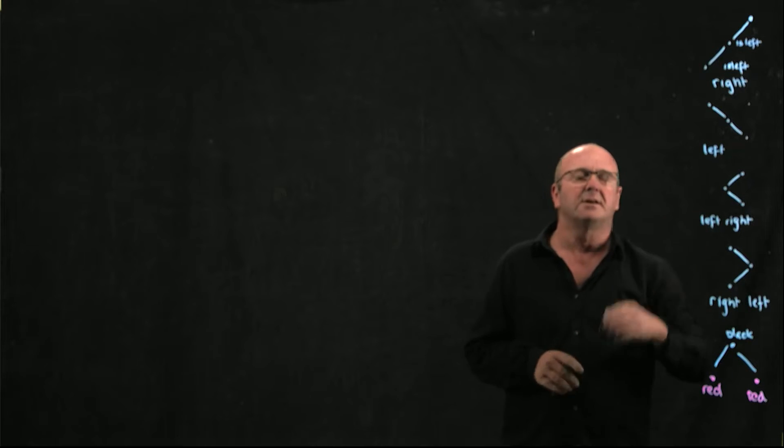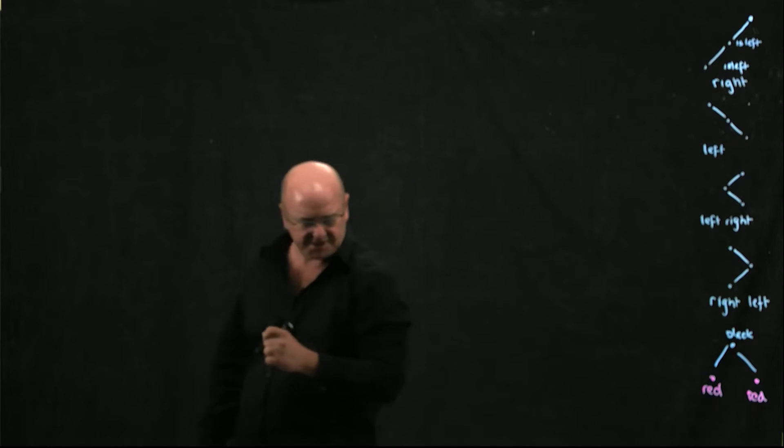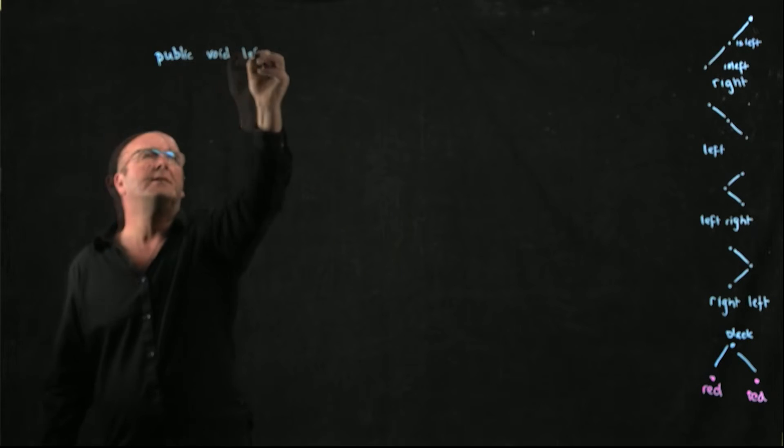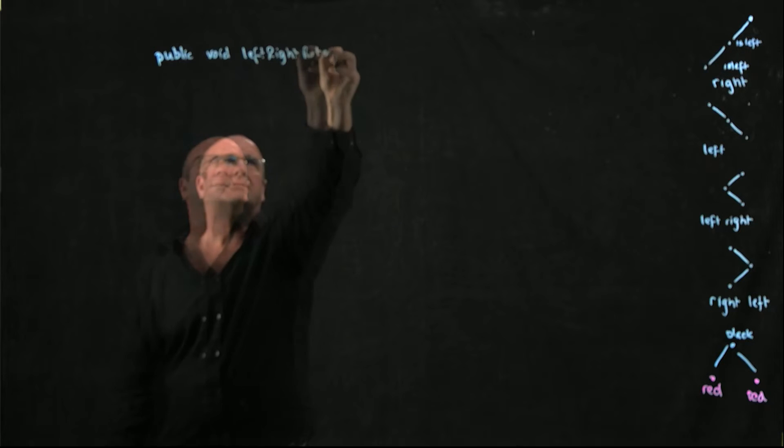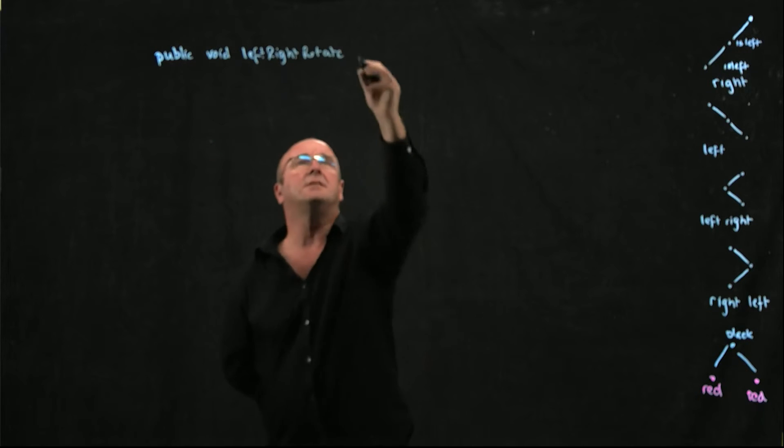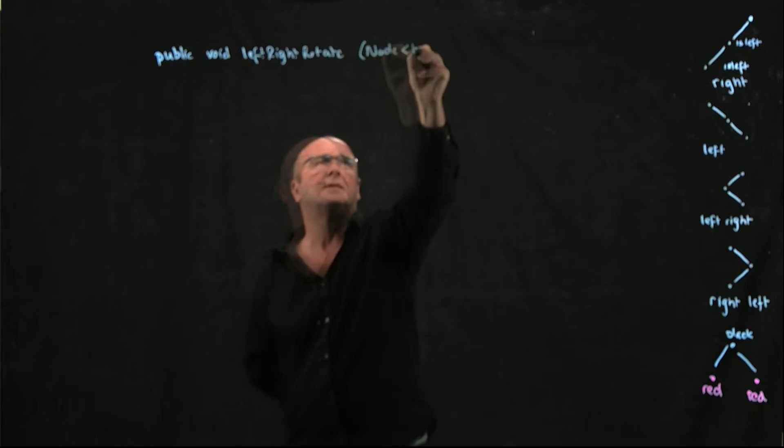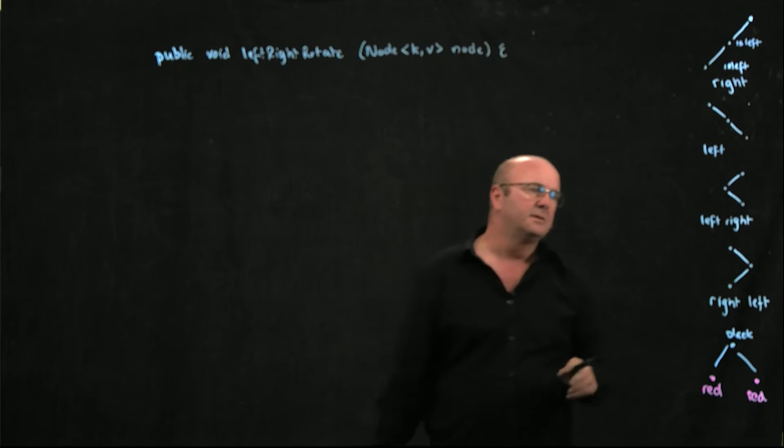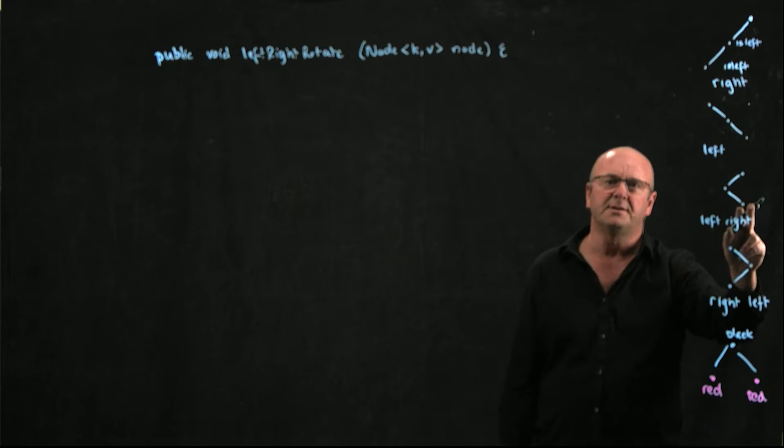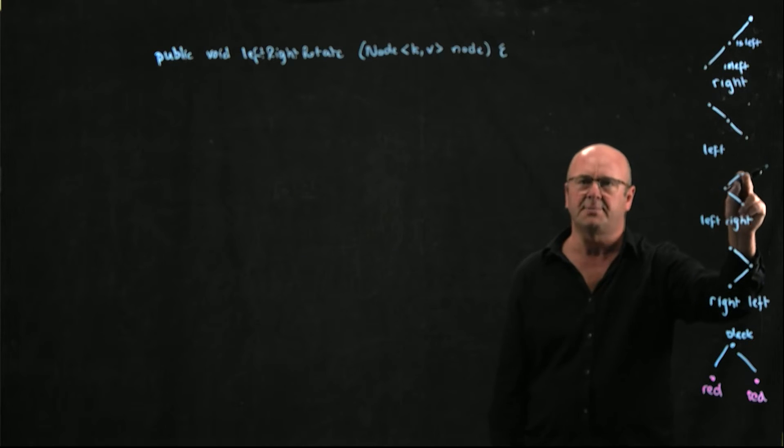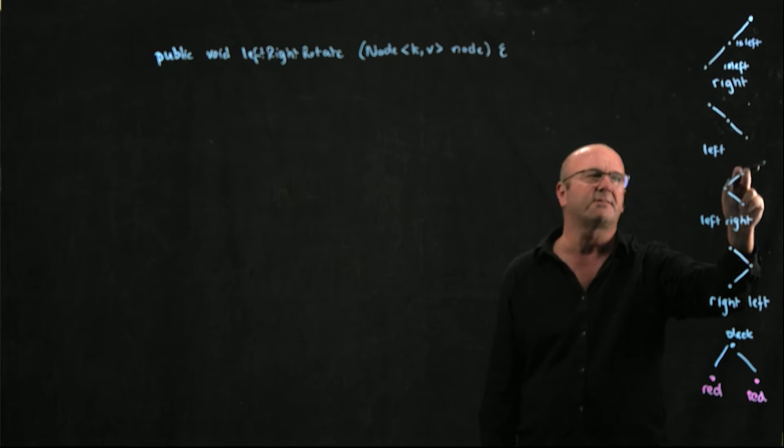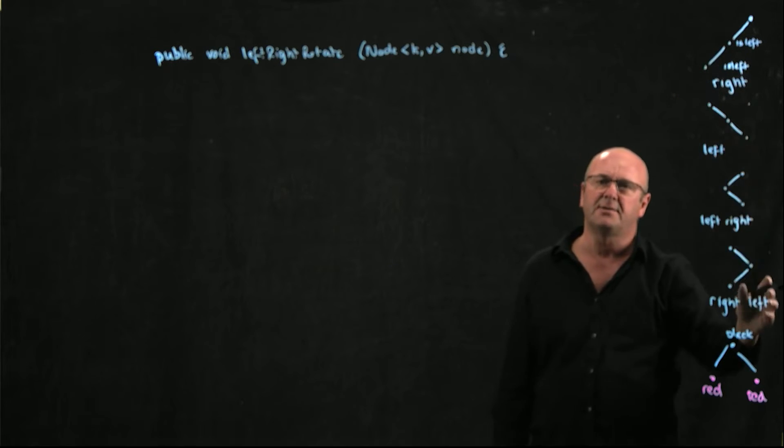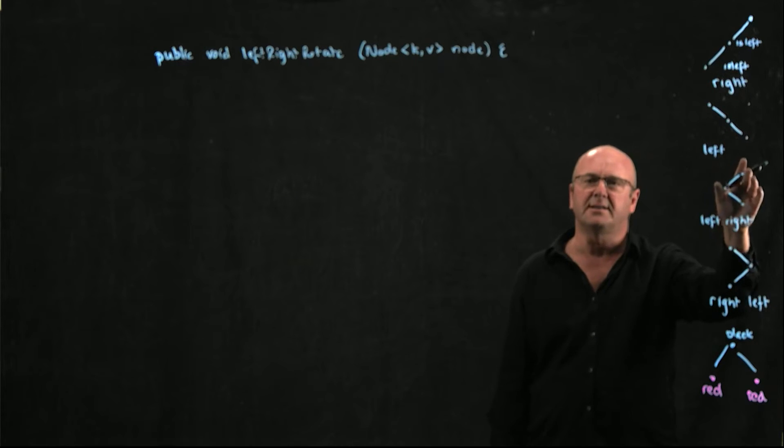So let's take a look at the code for our left-right rotation. We're going to have a public void left right rotate and our method is going to take a node KV called node. Remember that whenever we have a violation we're going to pass in the grandparent. We always pass in the grandparent whether we have to do a right rotation, a left rotation, a left-right or a right-left, we're passing in the grandparent.